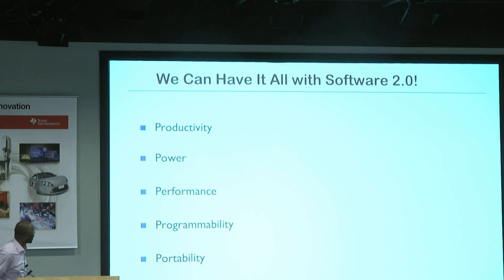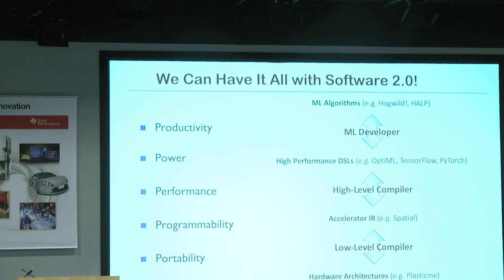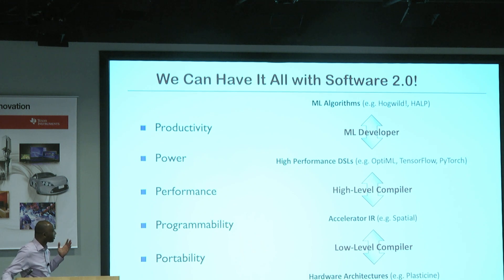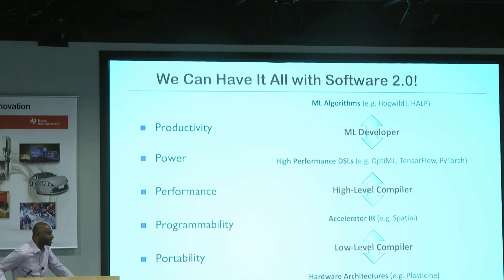We can have it all with Software 2.0, and that's all the P's: productivity, power efficiency, performance, programmability, and portability. We're going to do that by innovations in ML algorithms exploiting the statistical nature of machine learning — things like Hogwild — high-performance DSLs like TensorFlow and PyTorch, high-level compilation capabilities, new accelerator IRs like Spatial that represent hierarchical dataflow, low-level compiler capabilities, and hardware architectures like Plasticine.